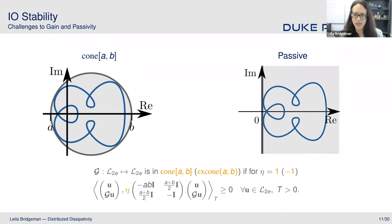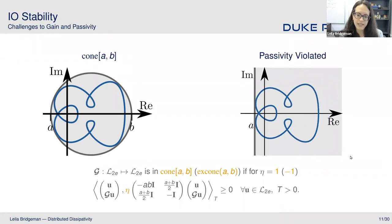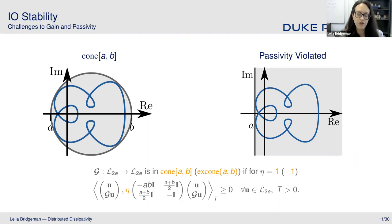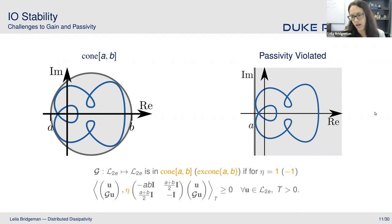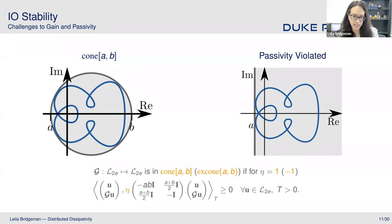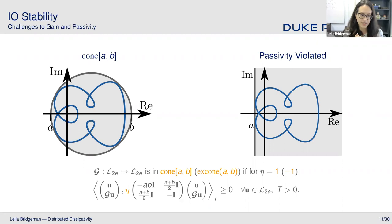For a passivity-violated system, its Nyquist plot will no longer lie entirely in the right half plane — it'll poke a little bit into the left half plane. So it'll be in a half plane bounded below by some negative value instead of zero. A passivity-violated system is expected to be in the cone from some negative A value to infinity. This gives us a natural connection between passivity violations and conic sector descriptions.